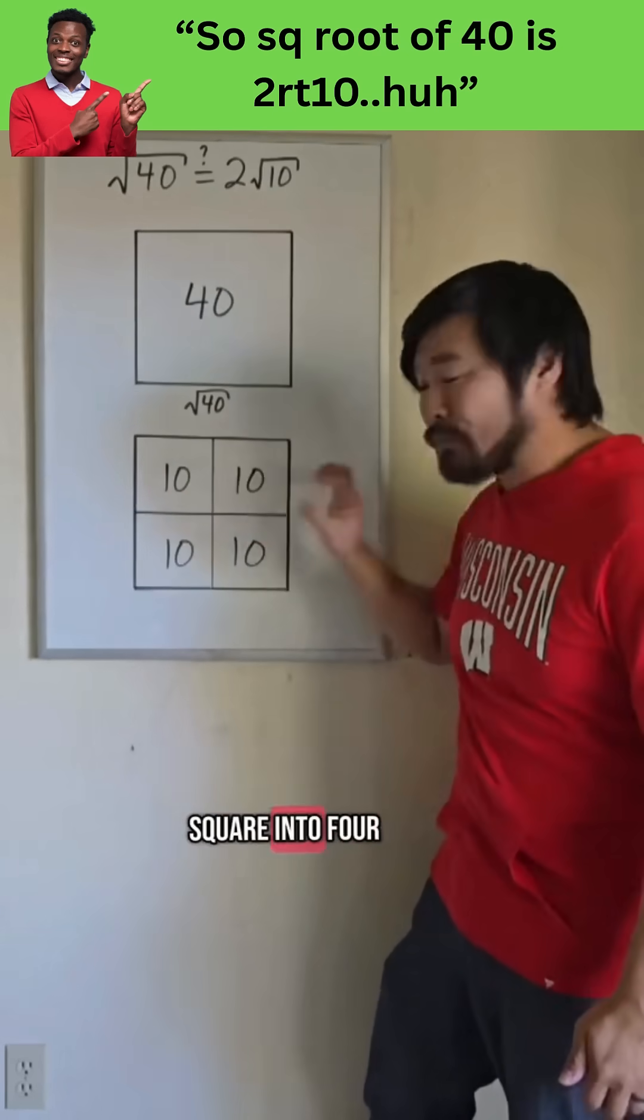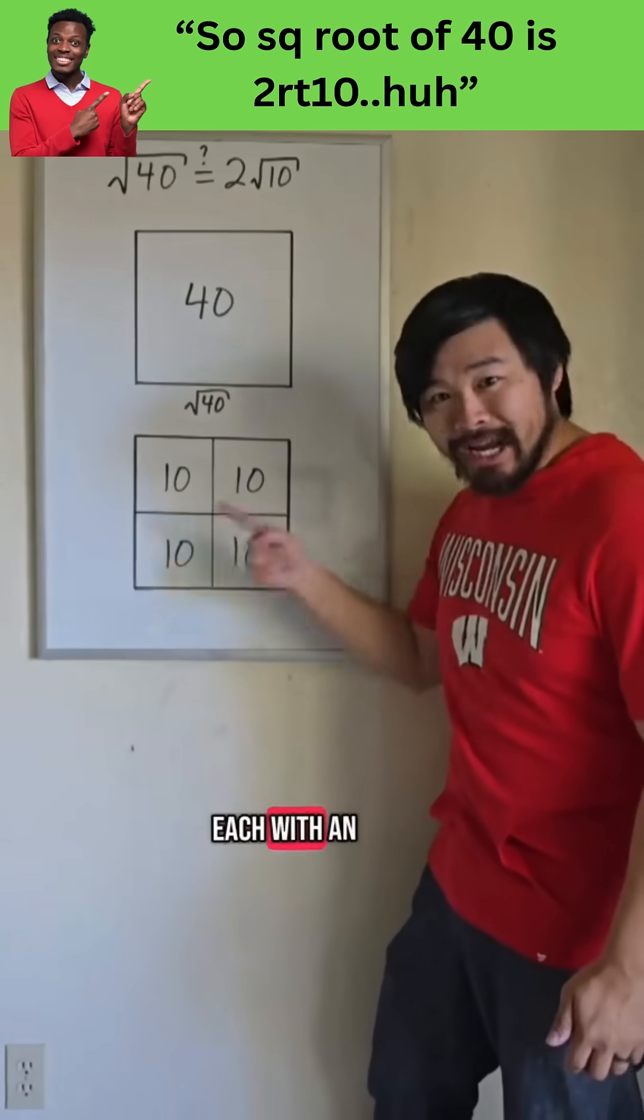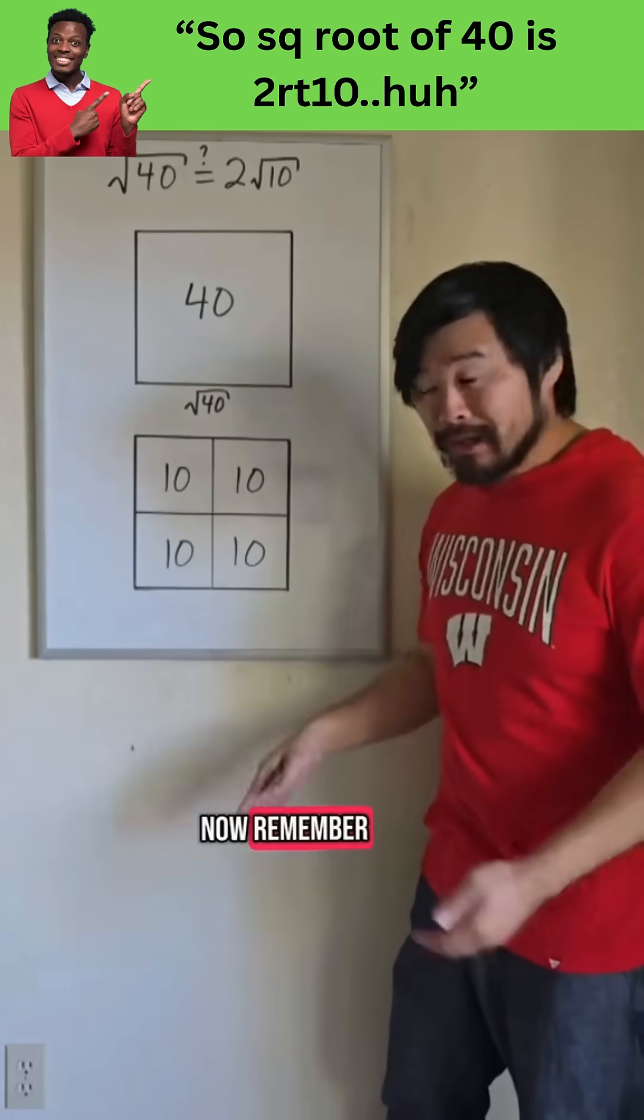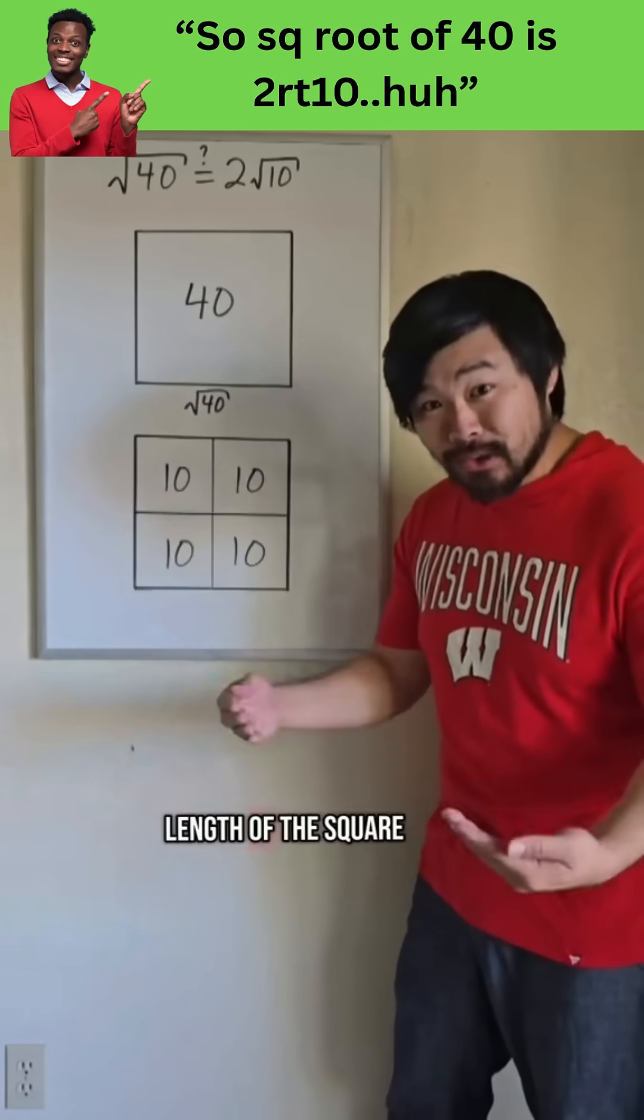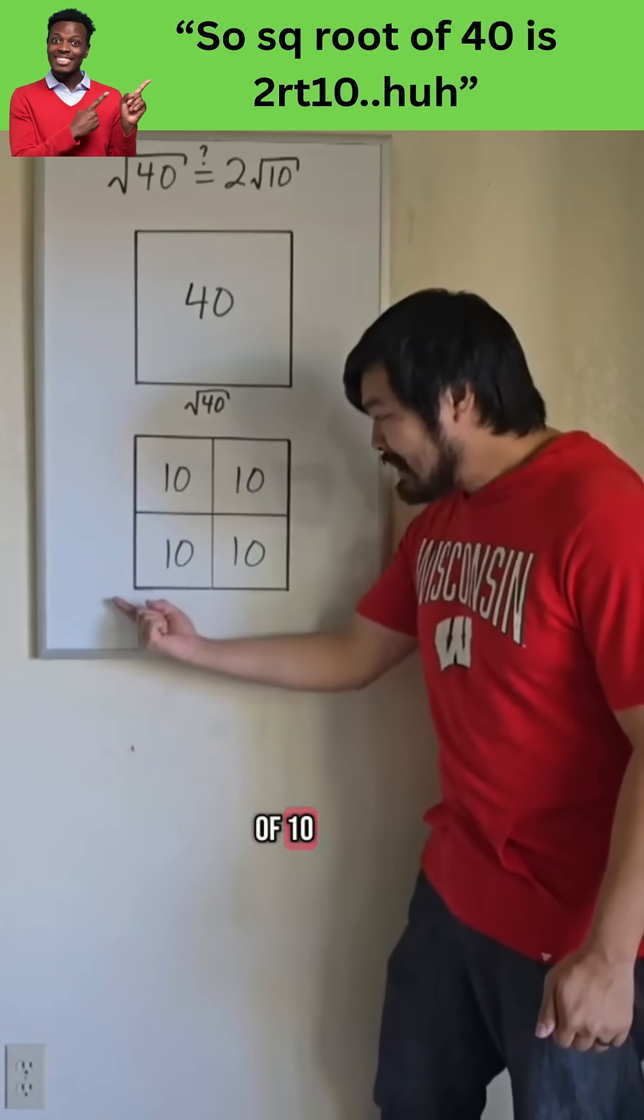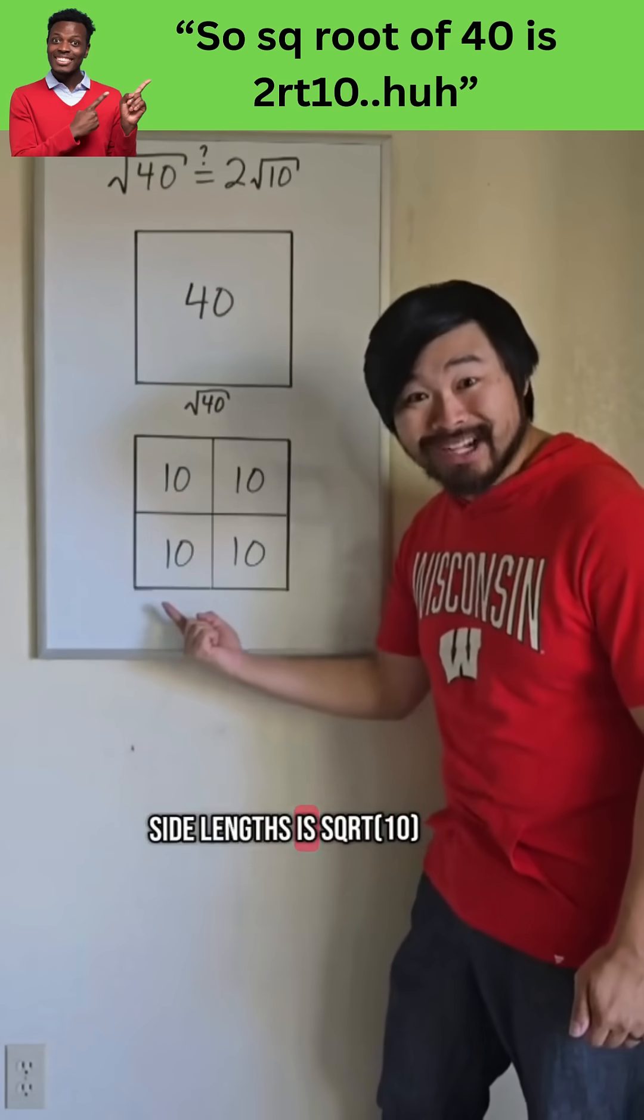Now I'm going to break this square into four smaller squares, each with an area of 10. Now remember, the square root is the side length of the square. So if we have a square with an area of 10, each of these side lengths is the square root of 10.